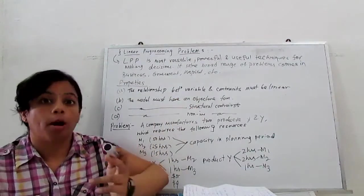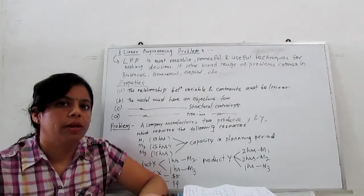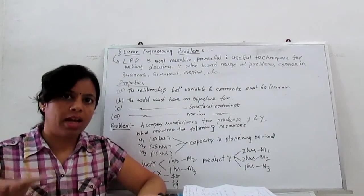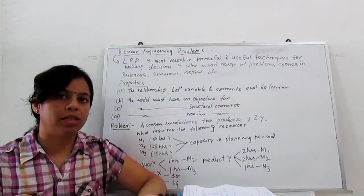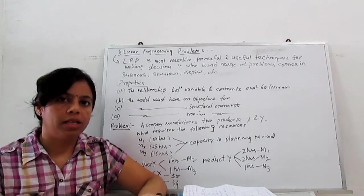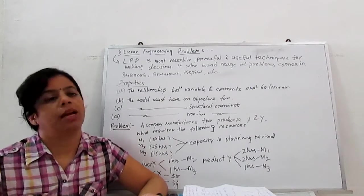The model must have an objective function. Objective function means what we need - if we need to maximize our thing, that's a maximize problem. If we need to minimize, then that is a minimize problem.